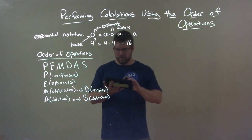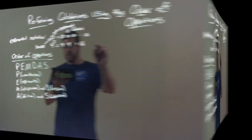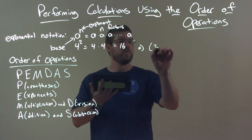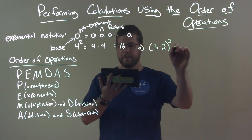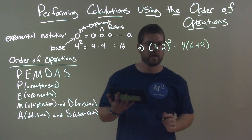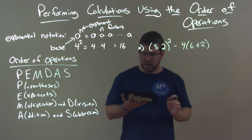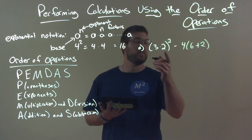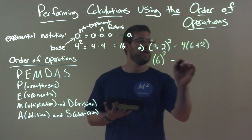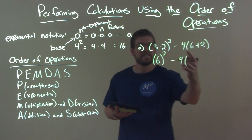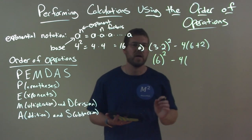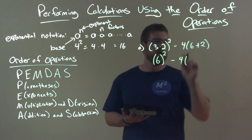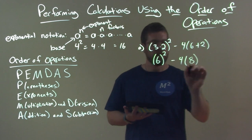Let's practice a few examples. We have 3 times (2) squared minus 4 times (6 plus 2). Order of operations tells us to simplify within parentheses first. So inside the first parentheses, 3 times 2 is 6 — keep the squared. Inside the second parentheses, 6 plus 2 is 8, even though addition is near the end of PEMDAS, since it's within parentheses we do it first.